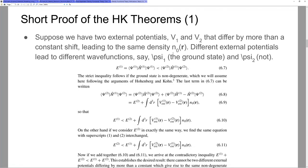So let's say psi 1 is the ground state wave function of H1, and psi 2 is not. That means the expectation value of the energy of psi 2 with Hamiltonian H1 is by definition larger than the expectation value of the energy of psi 1 with H1. The strict inequality follows if the ground state is not degenerate.